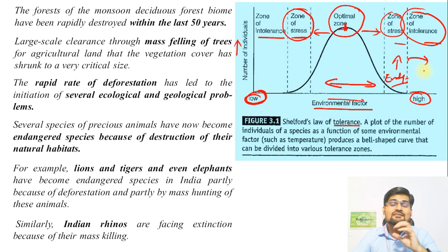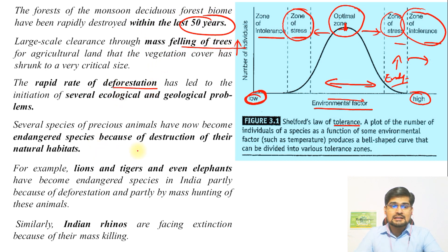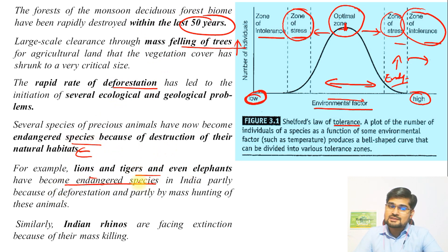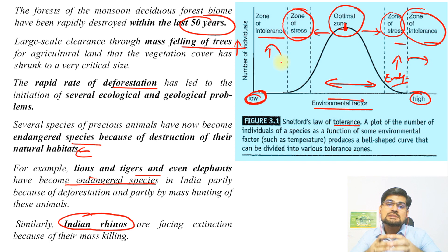This graph is useful for explaining the law of tolerance, and we have seen several examples of such species. Forests of monsoon deciduous forest biomes have been rapidly destroyed. Mass felling of trees, rapid deforestation, and destruction of natural habitats are all contributing to more and more endangered species. For example, lions, tigers, and even elephants have become endangered in India. Indian rhinos are the most famous example — they are now facing extinction, in the zone of intolerance. Human beings as a species have an important role to play in this ecosystem imbalance.